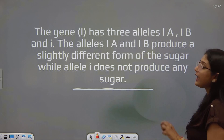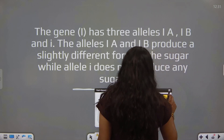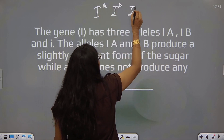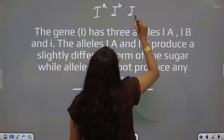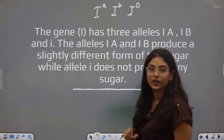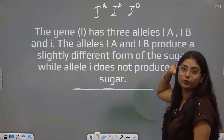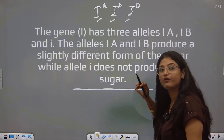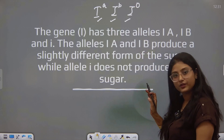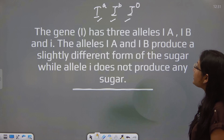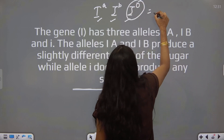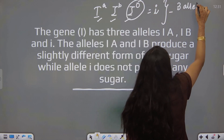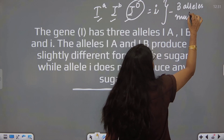The gene I has three alleles: A, B, and O. This is the concept of multiple alleles. Since humans are diploid organisms, each person possesses any two of the three alleles — so two alleles out of three will be present in each individual.